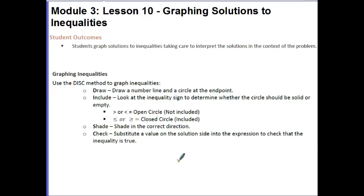So if it's included, it's closed. If it's not included, it's open. Then you're simply going to shade in the correct direction by creating an arrow in the direction of the solution. And then finally, do a quick check to substitute your value into the solution to make sure that the inequality is true the way you graphed it.